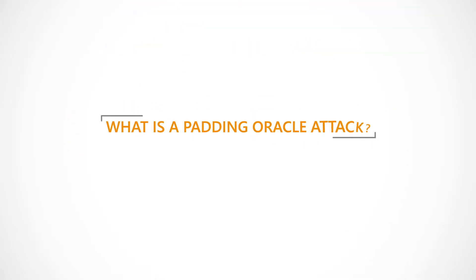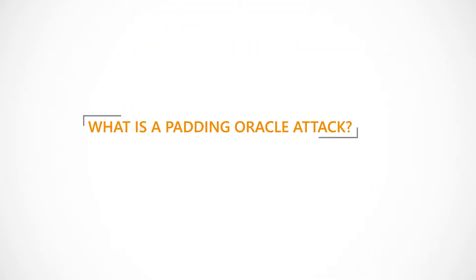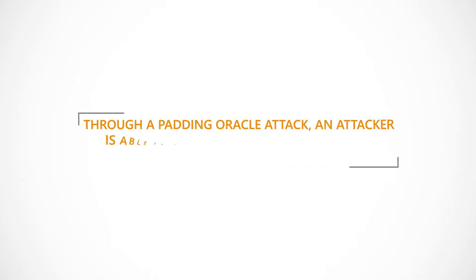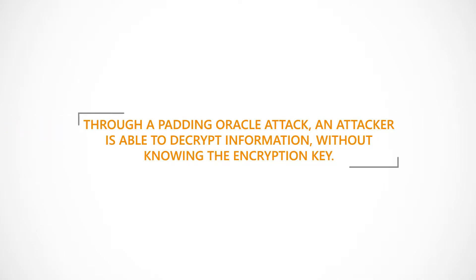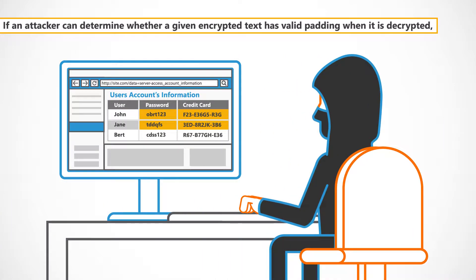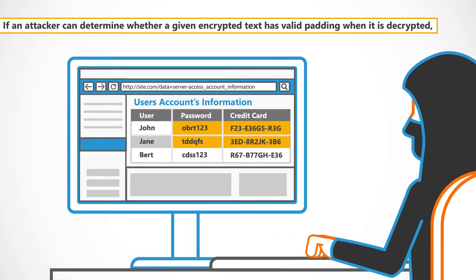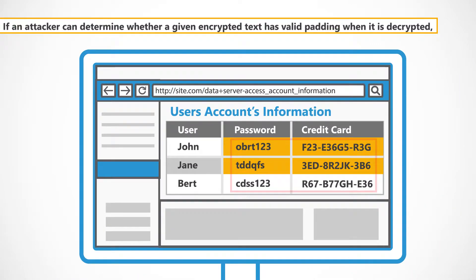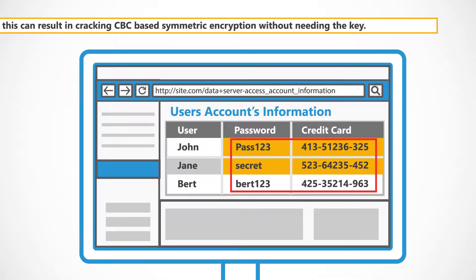So, what is a Padding Oracle attack? Through a Padding Oracle attack, an attacker is able to decrypt information without knowing the encryption key. If an attacker can determine whether a given encrypted text has valid padding when it is decrypted, this can result in cracking CBC-based symmetric encryption without needing the key.